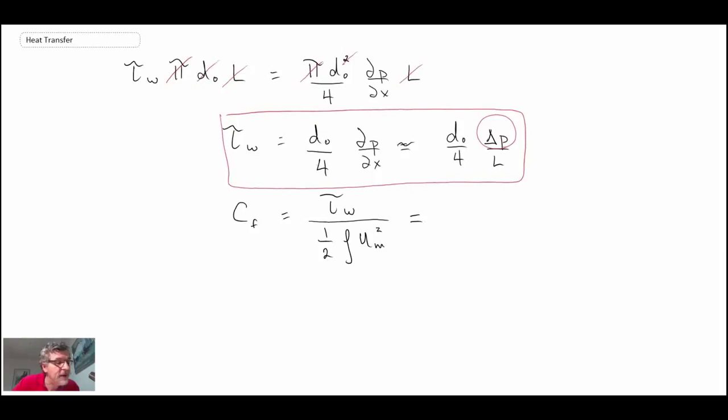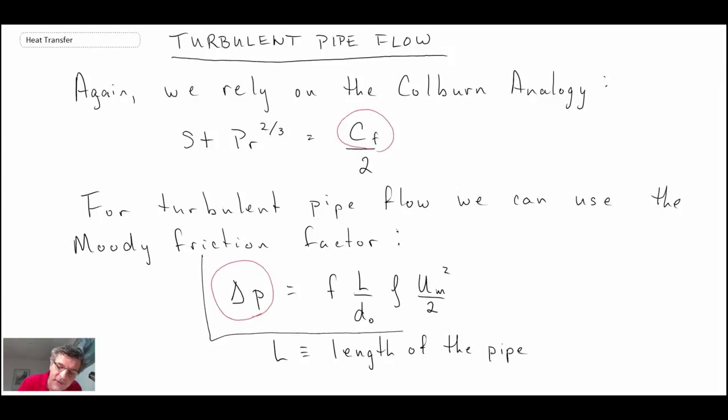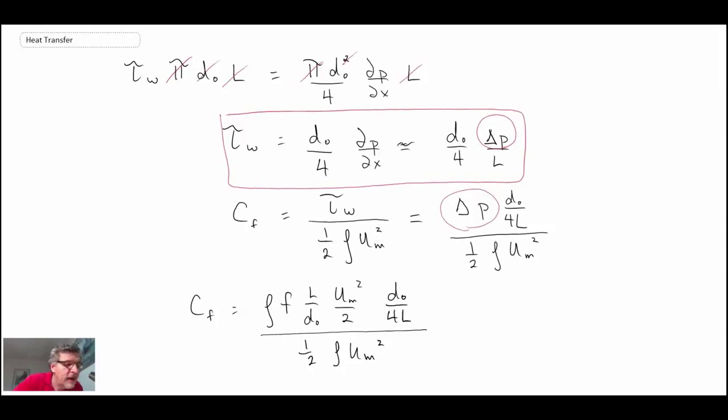So expressing the skin friction coefficient using our value for tau w. And now what I'm going to do is I'm going to take our expression for delta P that we had from the Moody friction factor. And now I can do a lot of cancellations. So we get that skin friction coefficient is the friction factor divided by 4. I can then take that and put it into the Colburn analogy and we obtain the following. It's just the friction factor divided by 8.